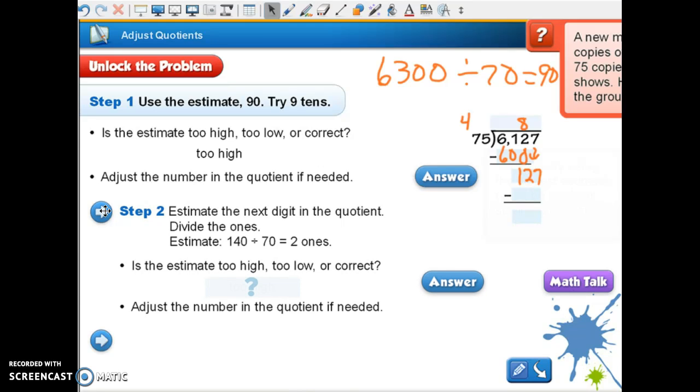Is 12, can I take 12 and spread it out among 75 groups? No, we're good there. We're going to bring down our 7. Okay, so now we're moving on to step 2. Estimate 140 divided by 70. How many 70s in 140? 2, so let's try a 2.